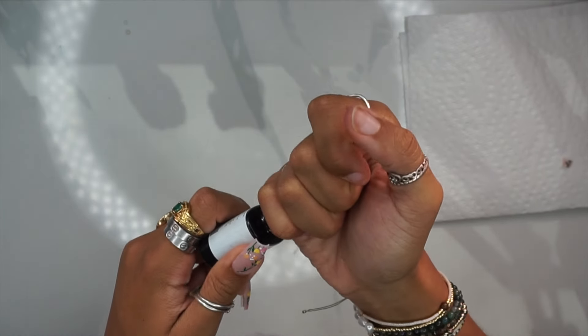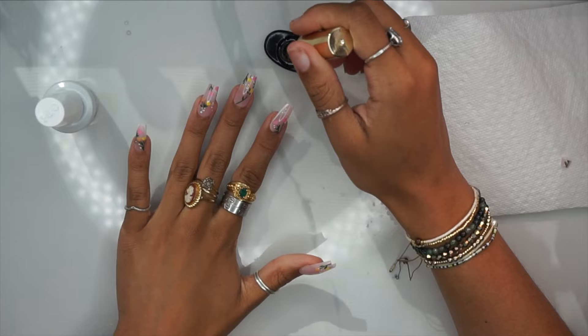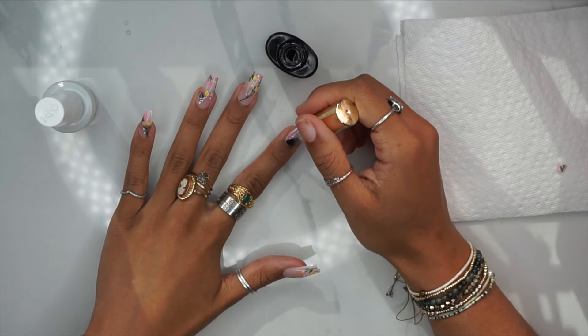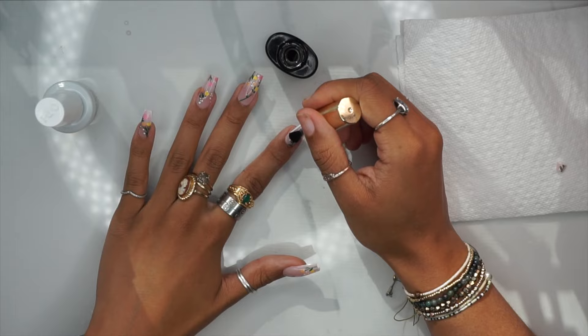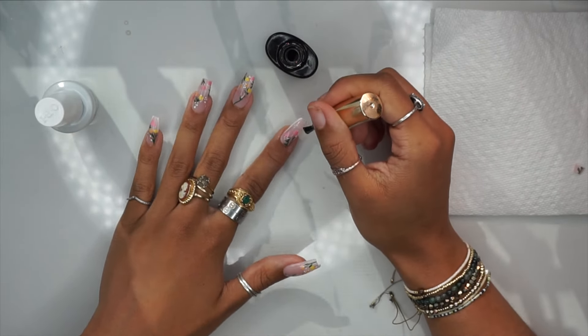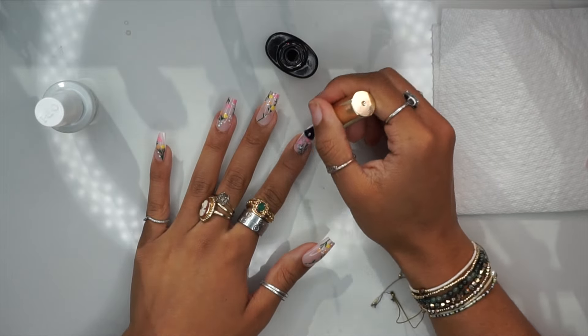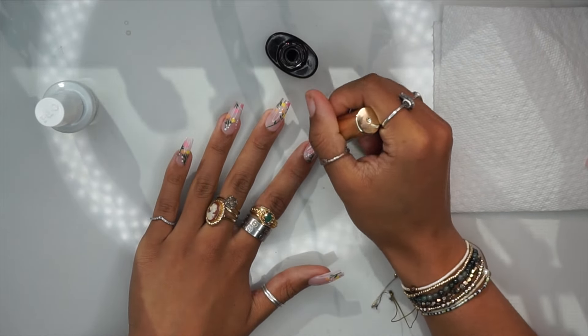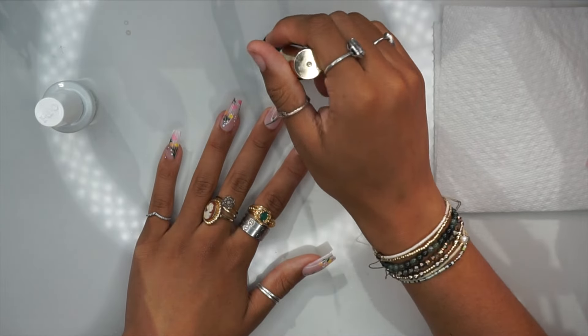Now we're going to do top coat. I'm just using this basic clear top coat. This is my favorite top coat—this one is by Model Ones. This is not their no-wipe top coat, this is their basic gel top coat, and it's my absolute favorite. I'm just going in and I'm doing that, but I'm going to show you some other things you can do instead.